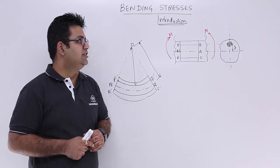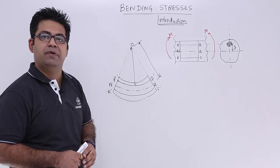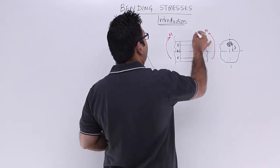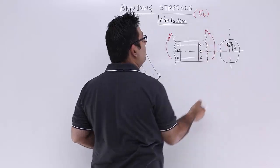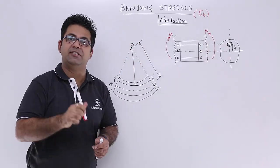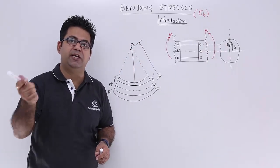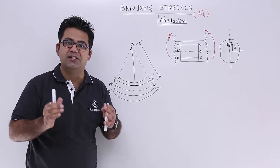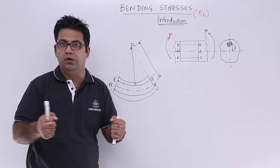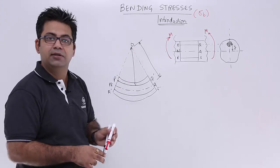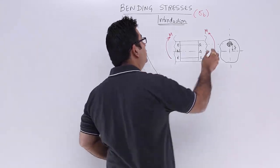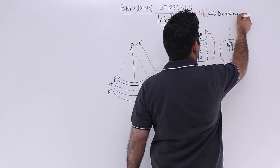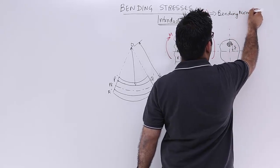Let's start understanding bending stresses in beams. We introduce the concept of bending stress, denoted as sigma_b. Unlike sigma_t and sigma_c — tensile stress and compressive stress — which are produced due to axial forces of a pull or a push, sigma_b is produced due to a bending moment.